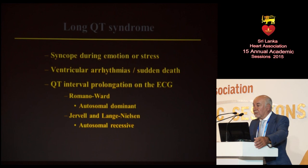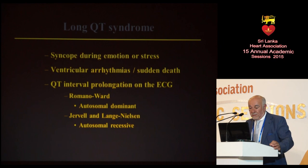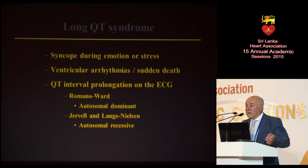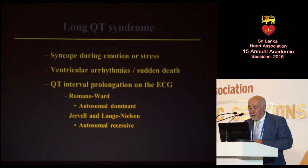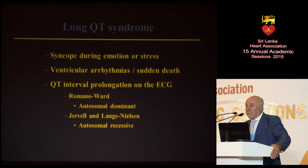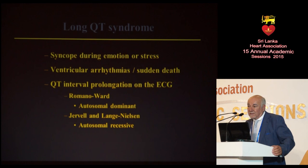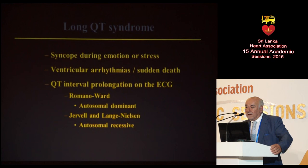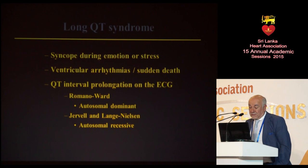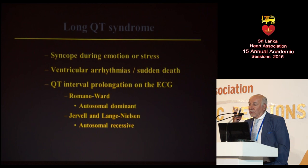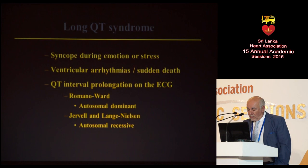What is the result of long QT syndrome? Basically every single channelopathy gives the same problems: syncope or sudden cardiac death because of ventricular arrhythmias. In long QT syndrome, the marker on the electrocardiogram is, of course, a long QT interval. We know two different varieties: one inherited as an autosomal dominant trait, meaning 50% of offspring will be affected; and the recessive form, which is the more severe form associated with deafness. These children inherit two abnormal genes and have the highest mortality. So far, in terms of long QT type 3, we only know autosomal dominant forms.